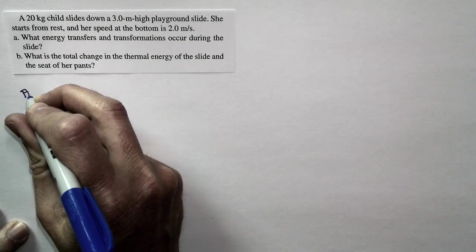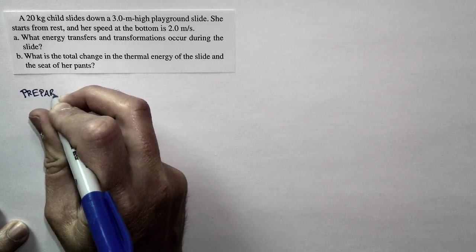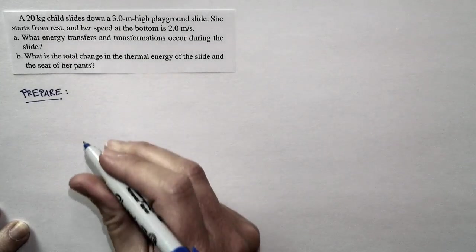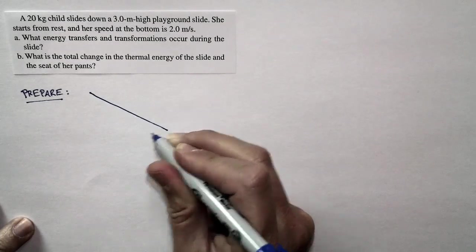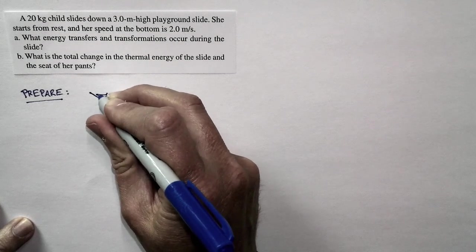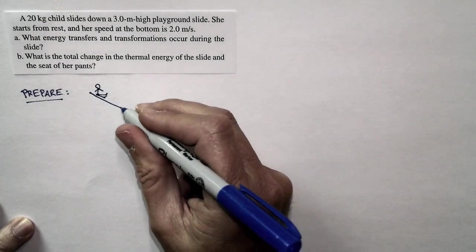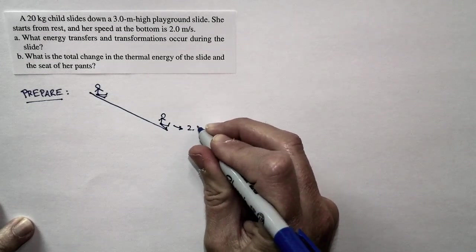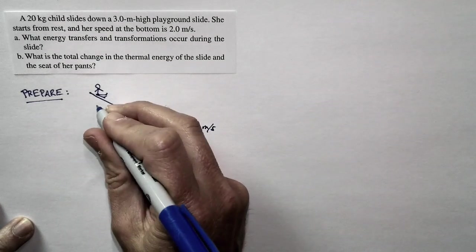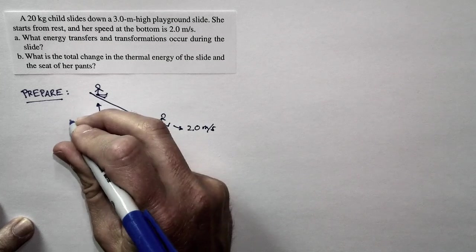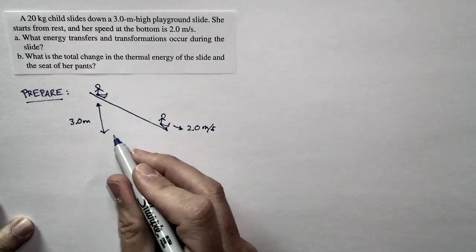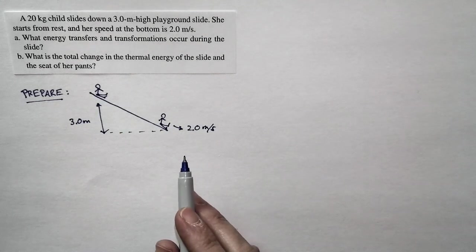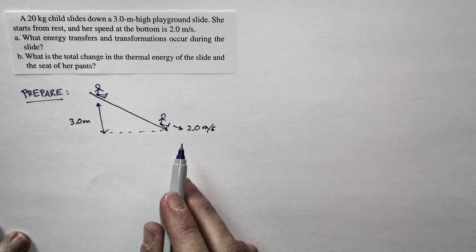Clearly this is a problem we want to treat by thinking about energy and energy transformations and transfers. This is a conservation of energy problem. She starts at the top and we're going to assume she's motionless at the top and then she's going to accelerate down the slide. She ends up at the bottom moving at 2.0 meters per second. At the start she's 3.0 meters above where she's going to finish.